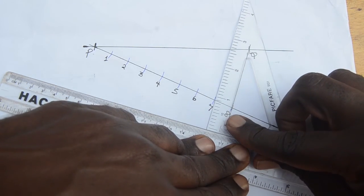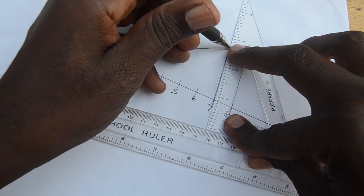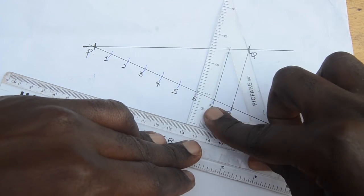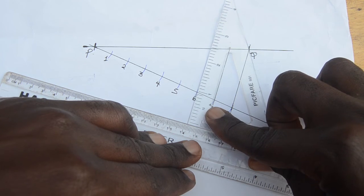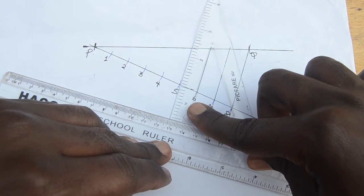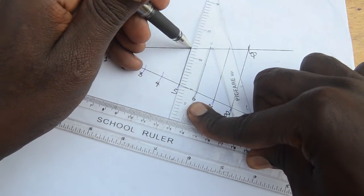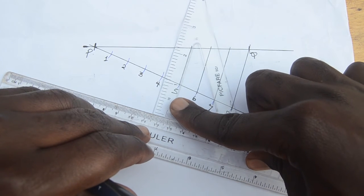The technique of sliding involves holding the set ruler firmly and holding the set square lightly to enable the set square to easily move to the different points. This gets better with practice.